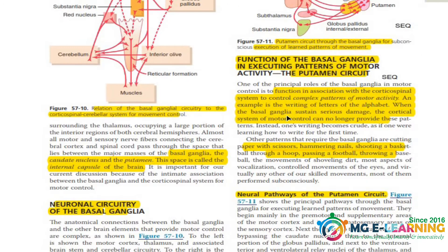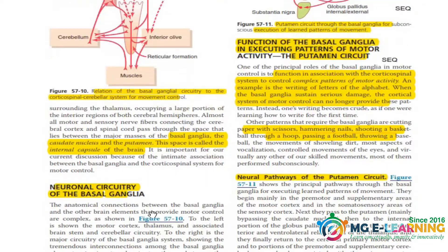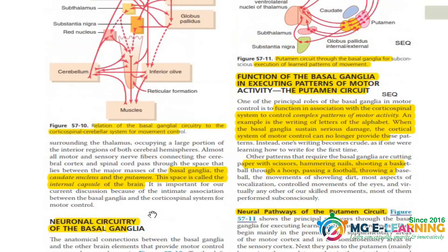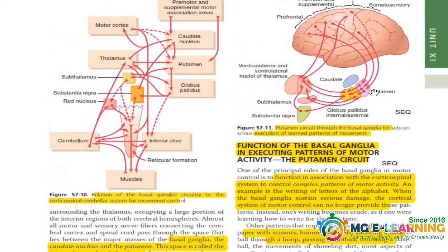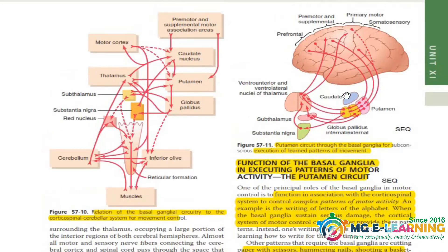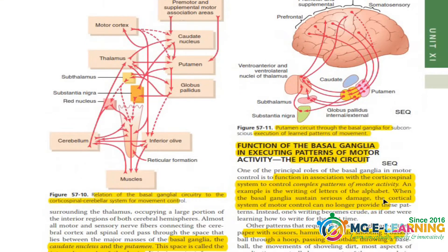The neuronal circuits of the basal ganglia are of two types. The first is the putamen circuit. You have to draw this in the paper — it is a very important SEQ — and you have to write the function of this circuit as well.